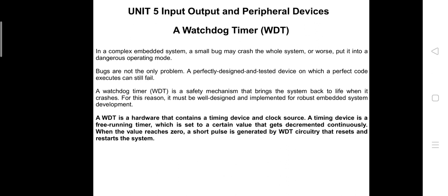If an expected output is not coming from the embedded system, it can be reset easily. For that purpose we use a watchdog timer. A watchdog timer is a safety mechanism that brings the system back to life when it crashes, or when an expected outcome is not coming — it brings the system into a last known stable state. For example, when we use a factory reset on a smartphone, the phone reconfigures itself to the last well-known stable state from the time of purchase or factory preparation.